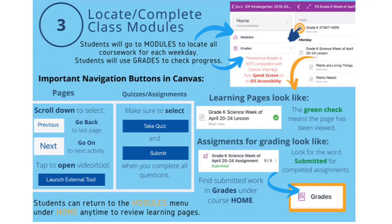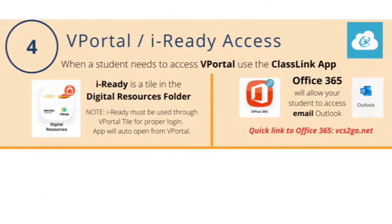You can find student grades in the Grades tab underneath the Course Home. If your Canvas course directs you to iReady, make sure that you close Canvas, open up the ClassLink app, and log in using your VCS username and password. Locate iReady in the Digital Resources folder. iReady will automatically open for you to begin working.